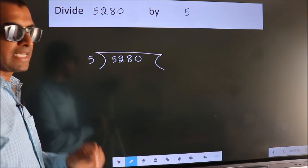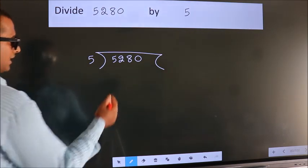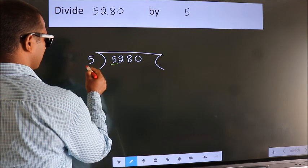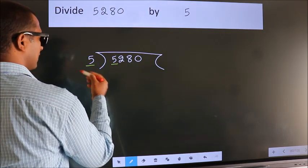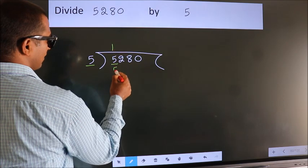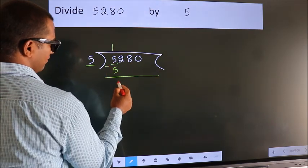5 here. This is your step 1. Next. Here we have 5. Here 5. When do we get 5? In the 5 table. 5 once is 5. Now we should subtract. We get 0.